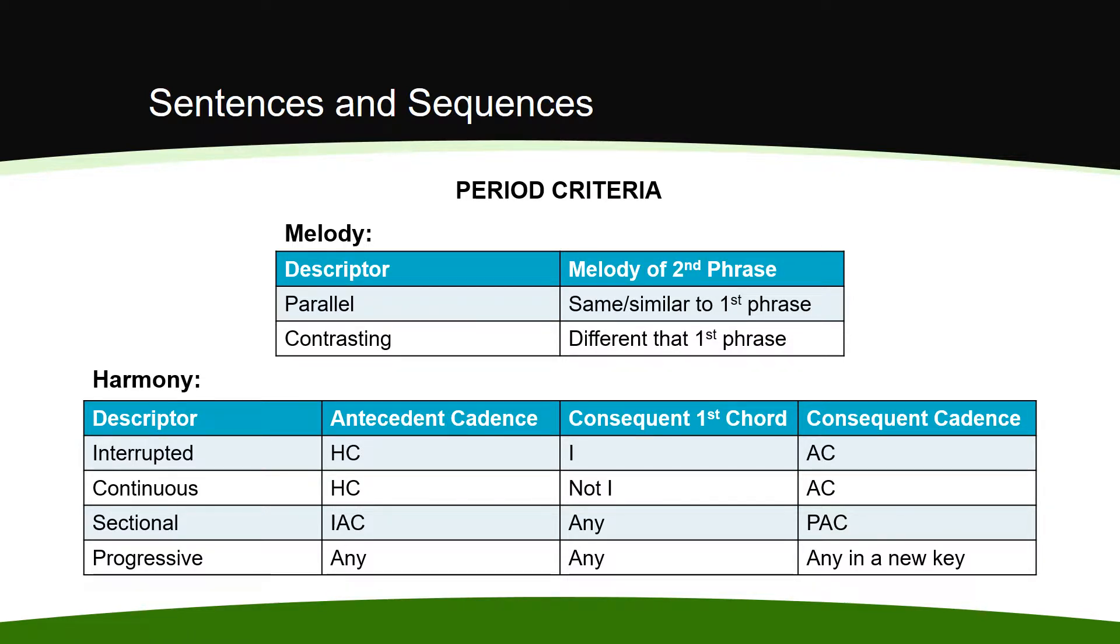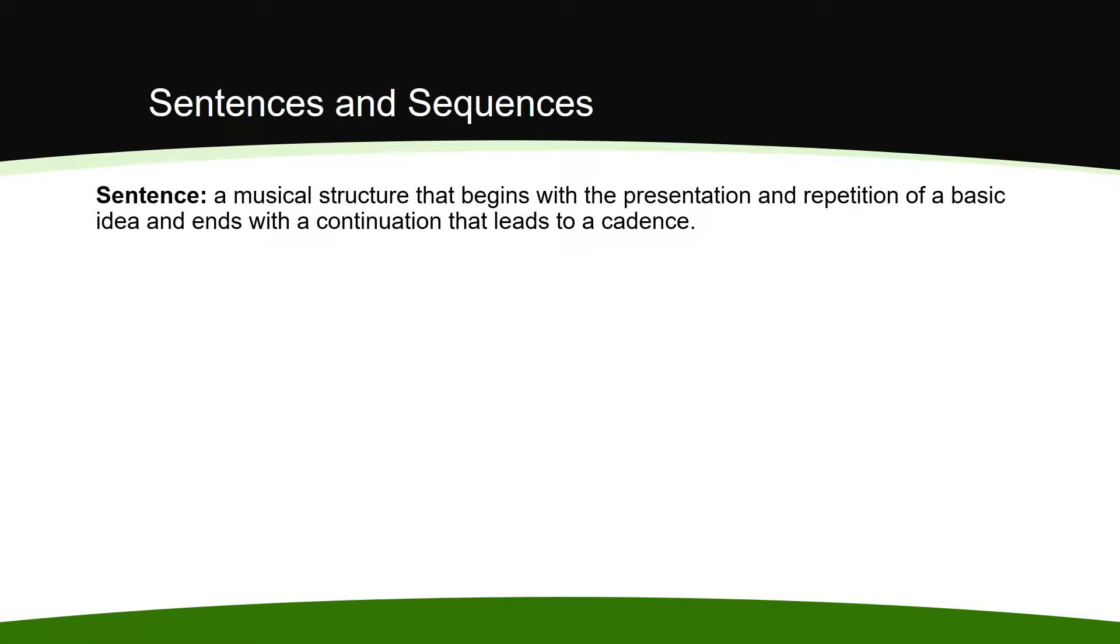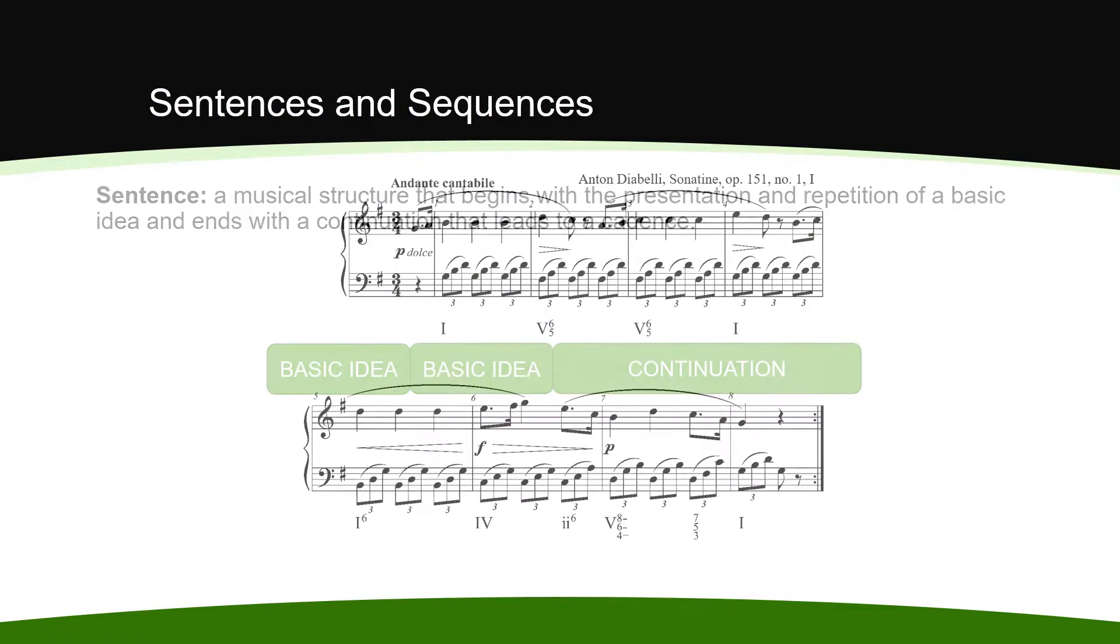Another common structure in music that is often of equal length to a period is called a sentence. A sentence is a musical structure that begins with the presentation and repetition of a basic idea and ends with a continuation that leads to a cadence. Here is an example.